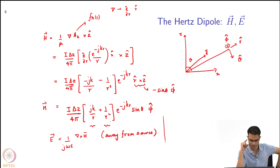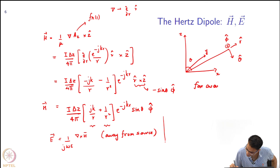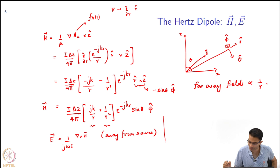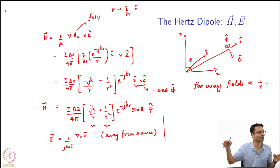Far-away fields are of the form 1/r, and this is true for any antenna — any weird-shaped antenna: go far away from it and the fields are going to fall off as 1/r. This will be an important result as we go ahead.